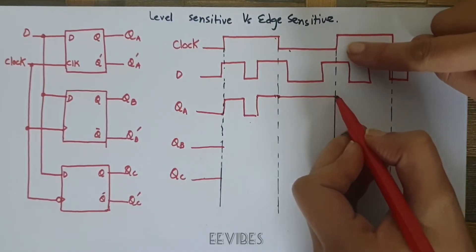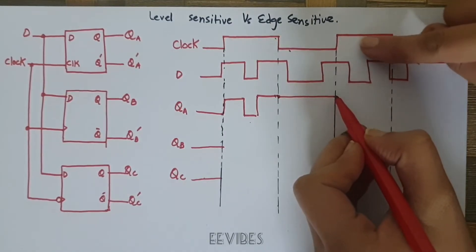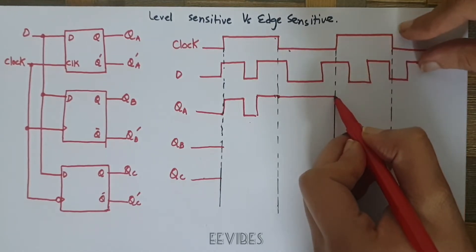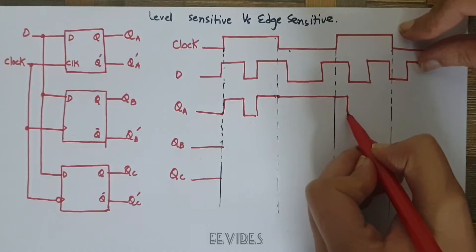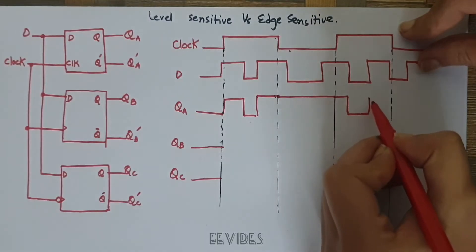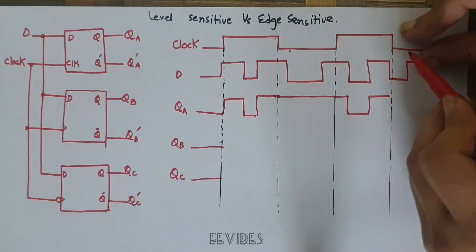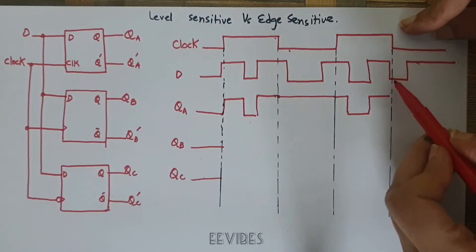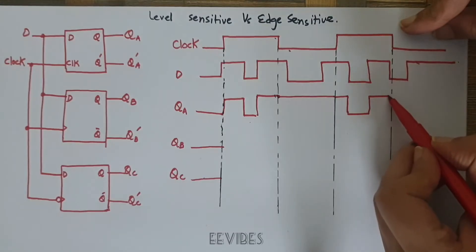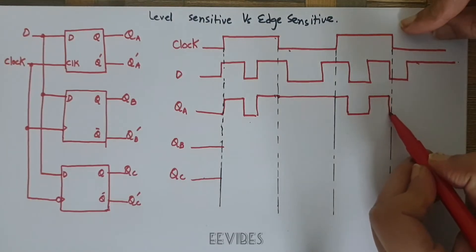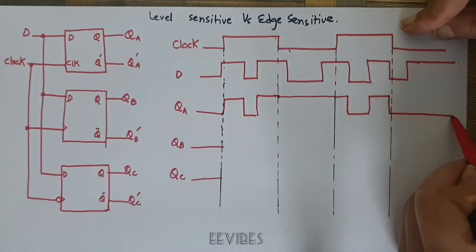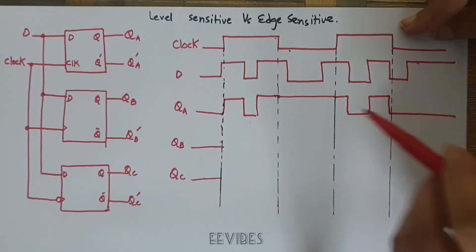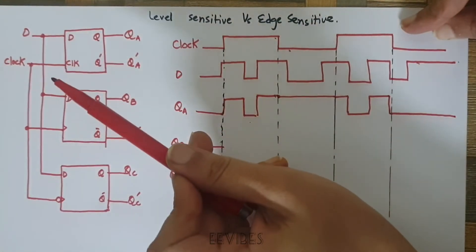When the positive level of the clock signal arrives again, it will follow the input data D waveform pattern. Here you can see while the positive cycle is switching to the negative level, the input is also switching to the negative level, and for the next whole negative cycle it will retain its previous value. This is how the positive level-sensitive latch works.